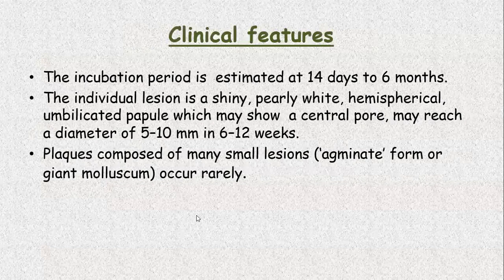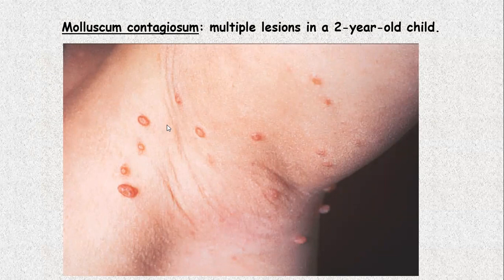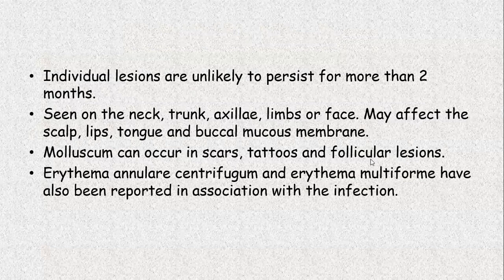Clinical features. The incubation period is estimated at 14 days to 6 months. Individual lesion is a shiny, pearly-white, hemispherical, umbilicated papule which may show a central pore and may reach a diameter of 5 to 10 millimeters in 6 to 12 weeks. Plaques composed of many small lesions (agminate form) or giant molluscum can rarely occur. This is how molluscum contagiosum looks — a small papule with a central umbilication. Individual lesions are unlikely to persist for more than 2 months. They are seen on the neck, trunk, axilla, limbs, and face; may affect the scalp, lip, tongue, and buccal mucous membrane; and occasionally occur on scars, tattoos, and follicular lesions.